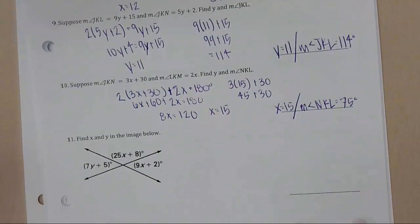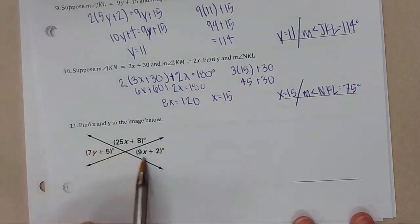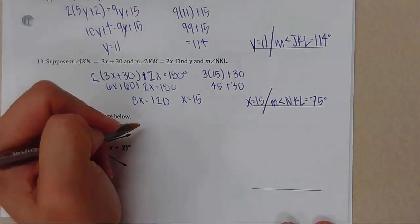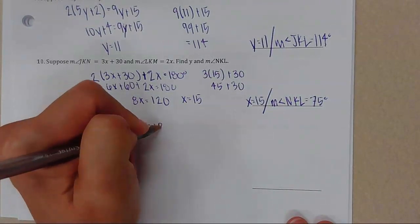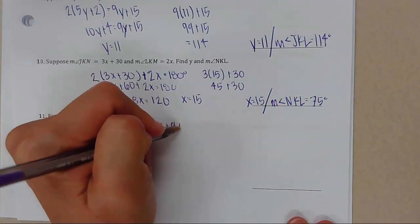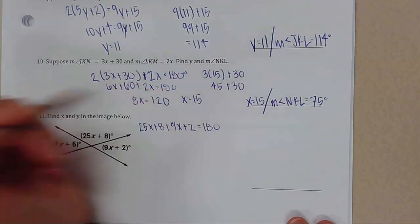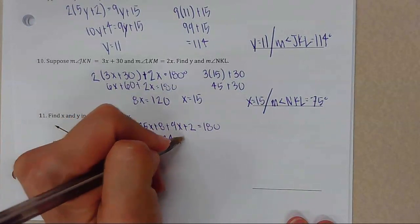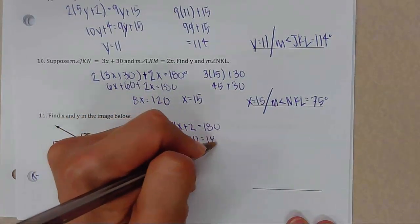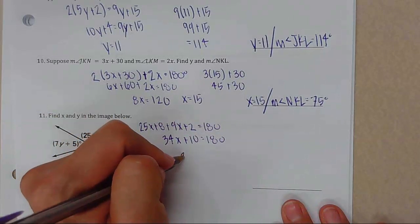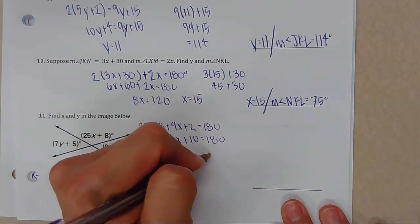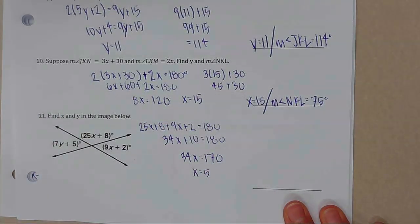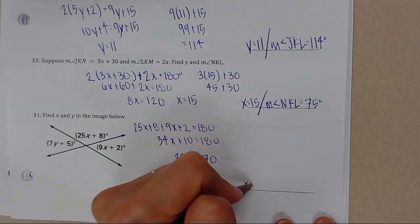Number 11 — these are a linear pair, so they add to 180. So 25x + 8 + 9x + 2 = 180. Combining terms: 34x + 10 = 180, so 34x = 170 and x = 5.